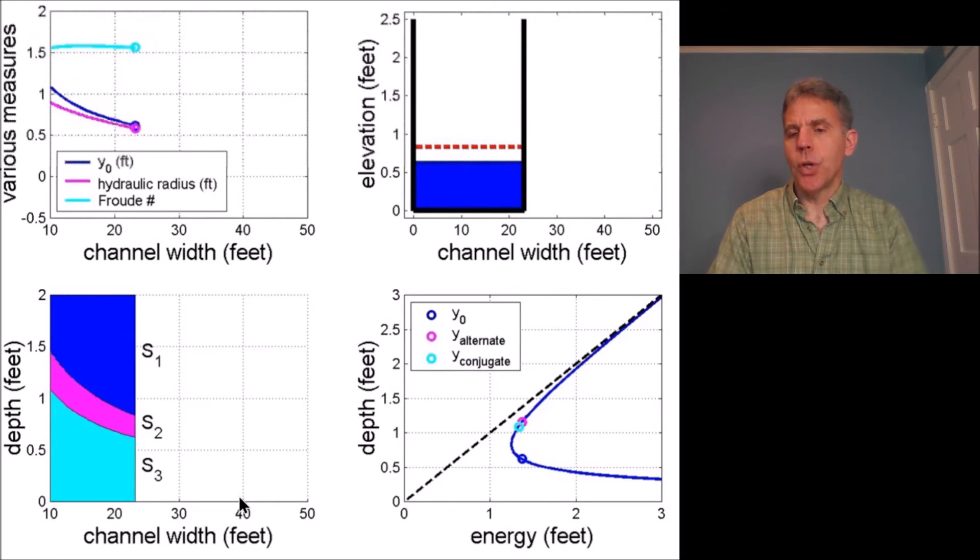I would invite you to look at my other video that is examining normal depth as it varies with channel width on a mild reach. Many similarities here, the big difference being of course the Froude number here is greater than one and that other animation is less than one.